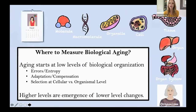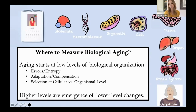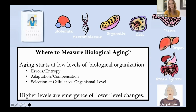When thinking about actually measuring biological age for a clinical trial or basic research, there are a number of different biological levels at which you can measure biological age. We actually think that aging probably starts at some of the lowest levels of biological organization — at the molecule level — and actually propagates up. What we see at the organismal level is kind of the emergence of the changes that are happening at these lower levels. So technically, you could measure biological age at any of these levels, and which one you pick might depend on what question you're asking.